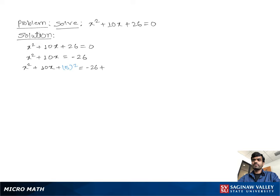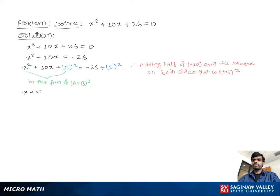Now we see that x squared plus 10x plus 5 squared is in the form of (a plus b) squared, which gives us (x plus 5) squared equal to negative 26 plus 5 squared, which is 25. So (x plus 5) squared equals negative 26 plus 25, which is negative 1.